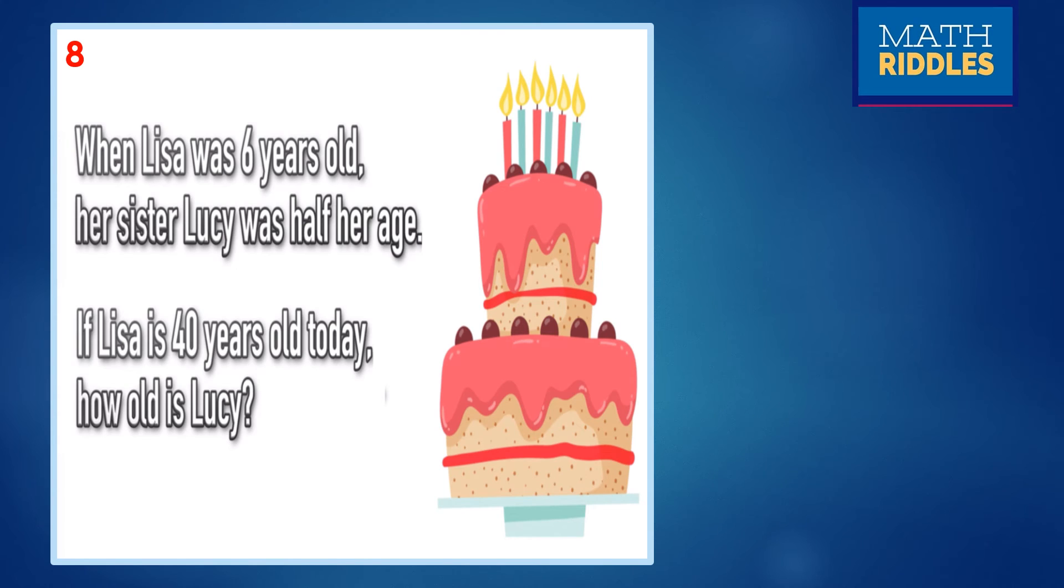The next question is when Lisa was 6 years old, her sister Lucy was half her age. If Lisa is 40 years old today, how old is Lucy? First, you observe the first two lines. Lisa was 6 years. Sister Lucy was half her age. Half means half of 6 is 3. So now you think here. Now she is 40. So how old is Lucy? So here, what is the age difference? The first two lines, age difference is 3. So think on that lines and you will get the answer. Give a pause and you can try it. And the answer is 37 years. Lucy will be 37 years. 6 minus 3 is 3. So here, 40 minus 3, if you are doing, you will get 37 as answer. That will be the age of Lucy.